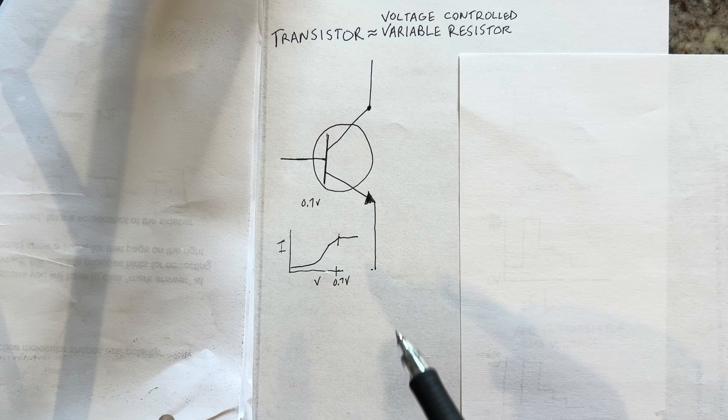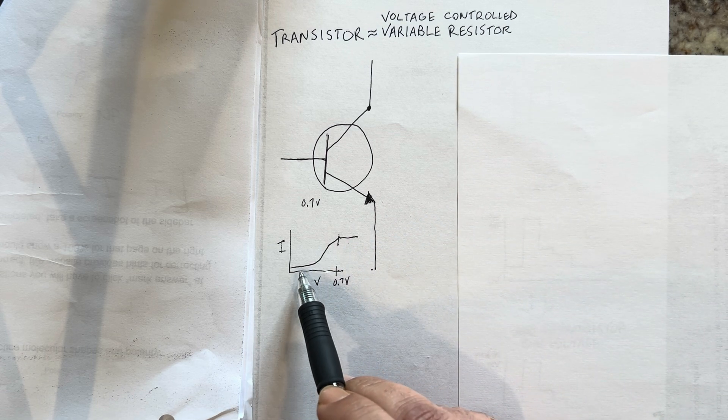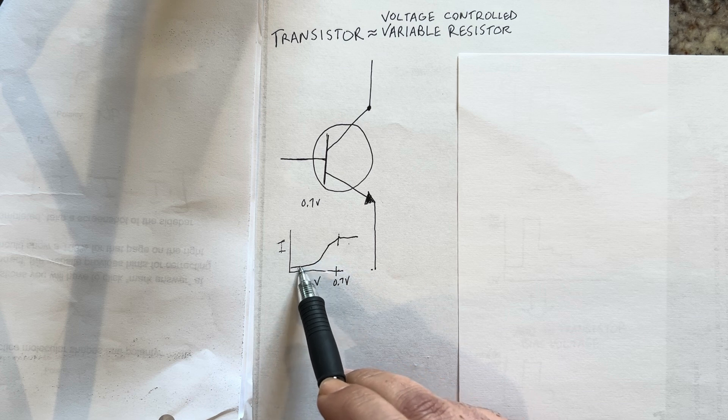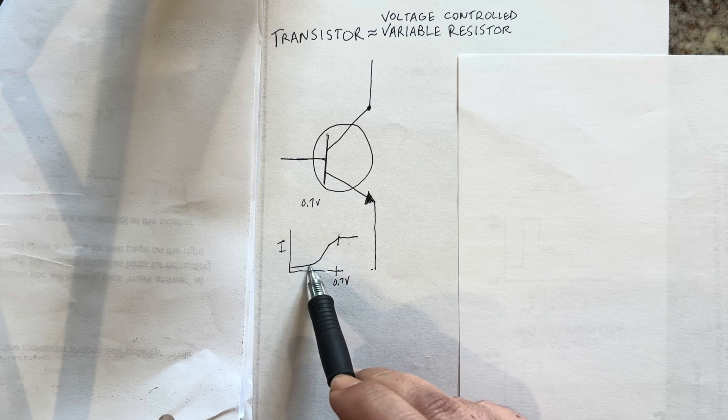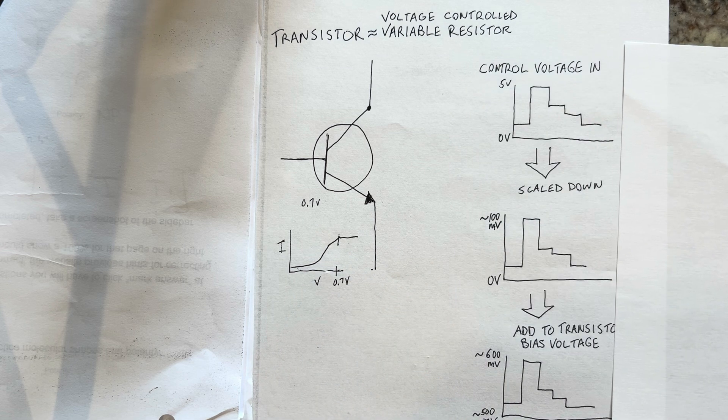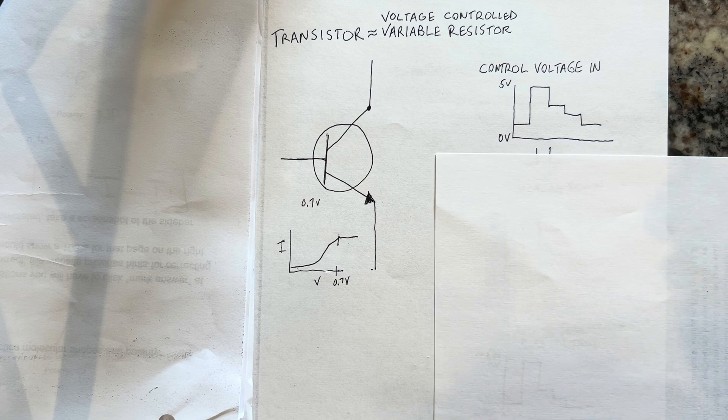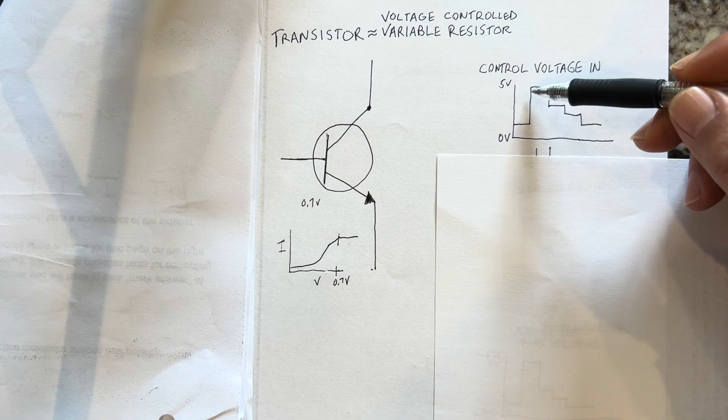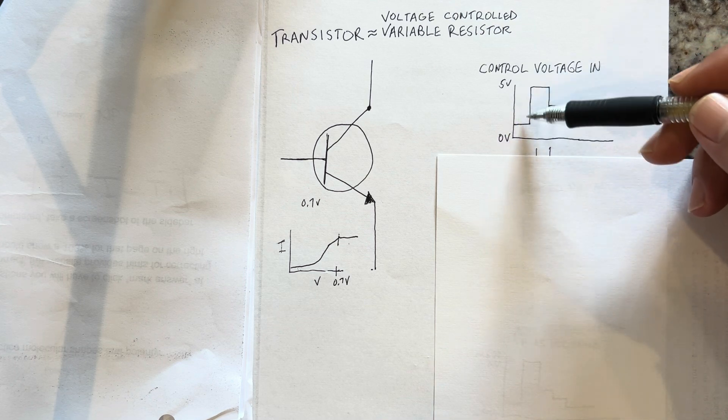Then it becomes linear, and at 0.7 volts it's saturated. The transistor is completely on. So how do we harness this power?